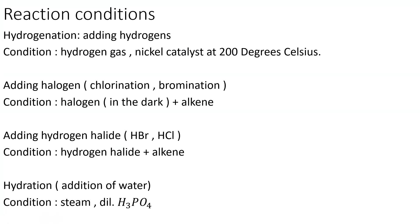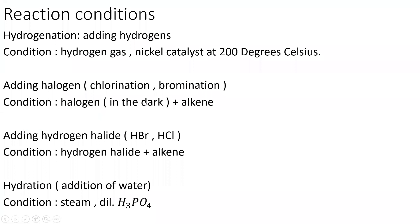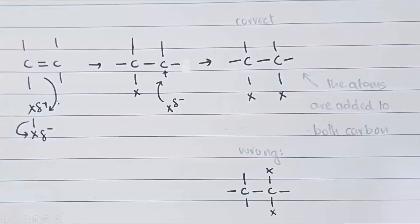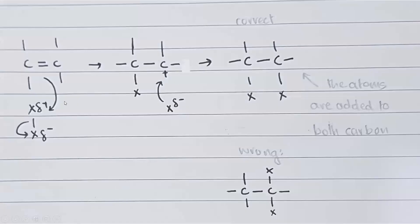Let's look at some reaction conditions. The mechanism is the same for all; only the electrophile changes. In the case of HBr, you draw H and Br instead of X and X — since Br is more electronegative, hydrogen will have the positive charge. For water, OH will be partially positive and oxygen, being more electronegative, will carry the partial negative charge.